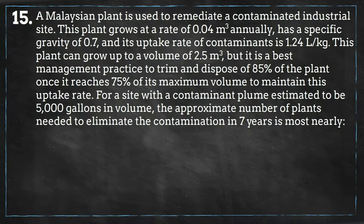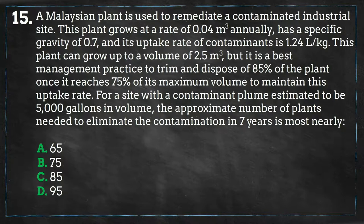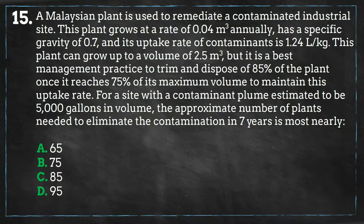For a site with a contaminant plume estimated to be 5,000 gallons in volume, the approximate number of plants needed to eliminate the contamination in seven years is most nearly: A) 65, B) 75, C) 85, or D) 95. Pause the video and give yourself five minutes to complete the problem.